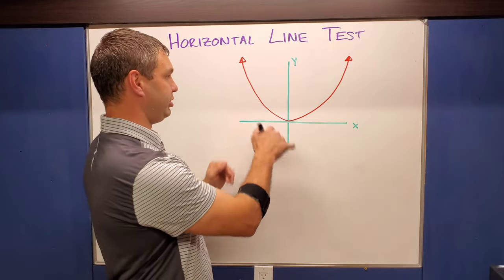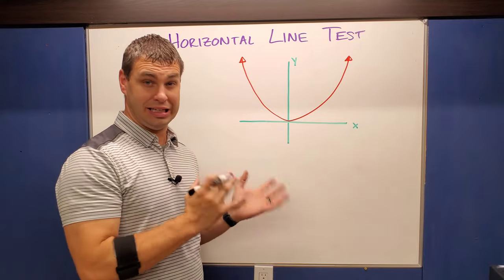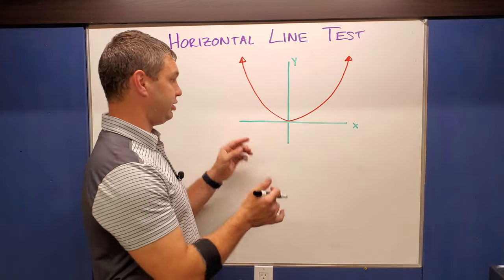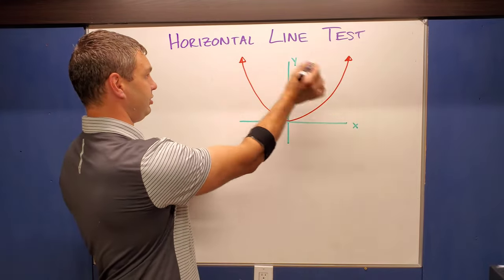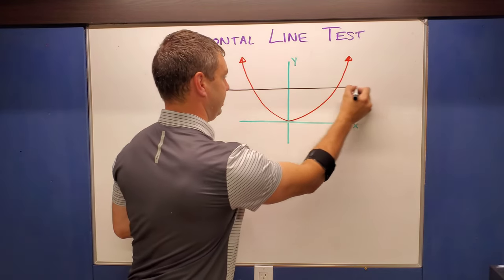So if I have a relation, in this case it's a parabola, and I want to know if that relation's inverse is a function, what I can do is use the horizontal line test. So I'm going to draw any horizontal line,